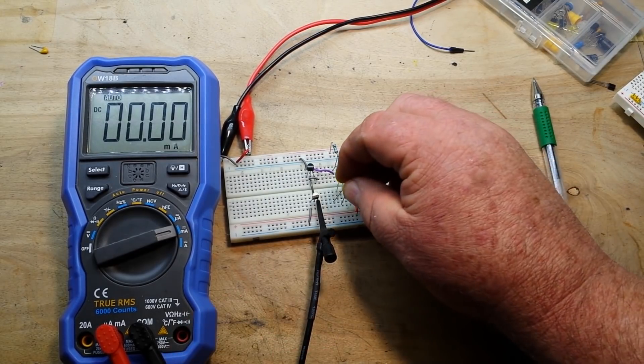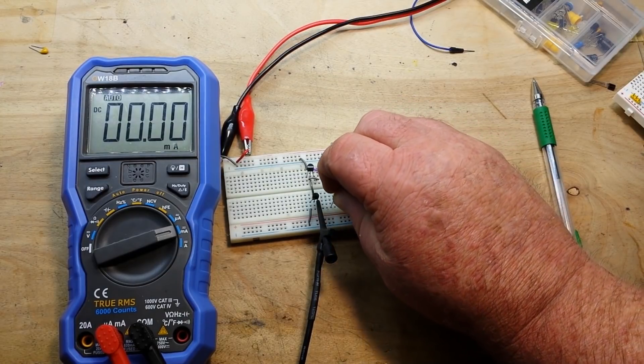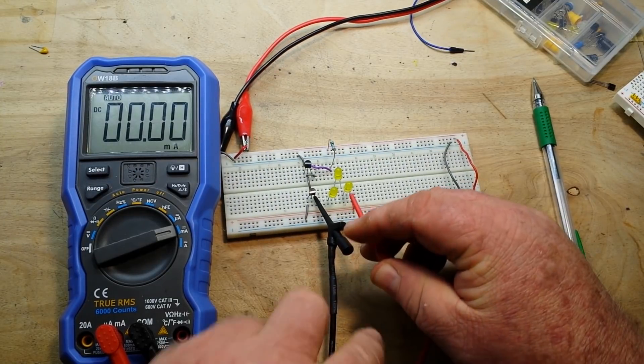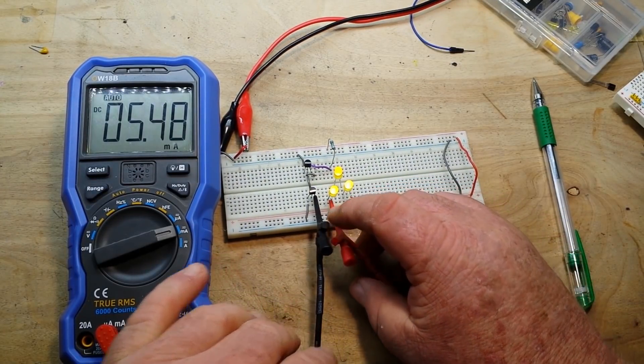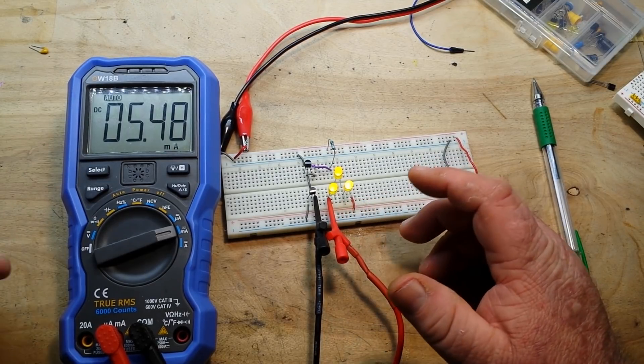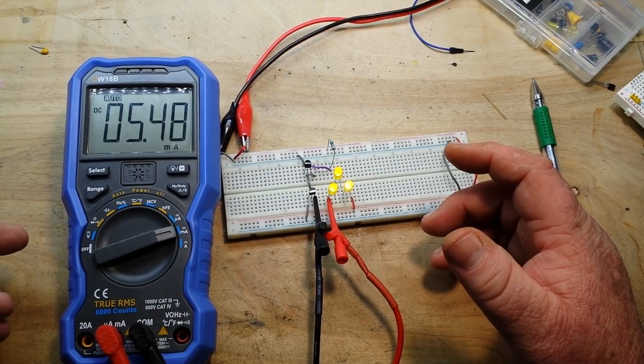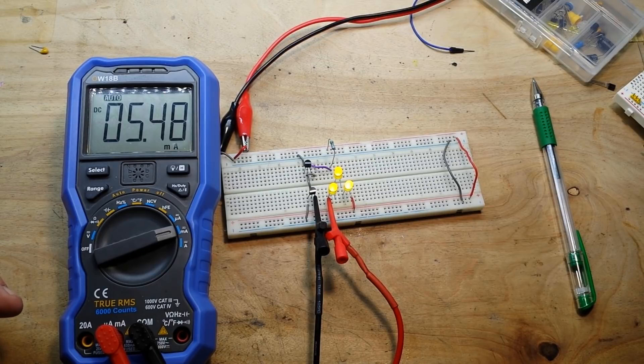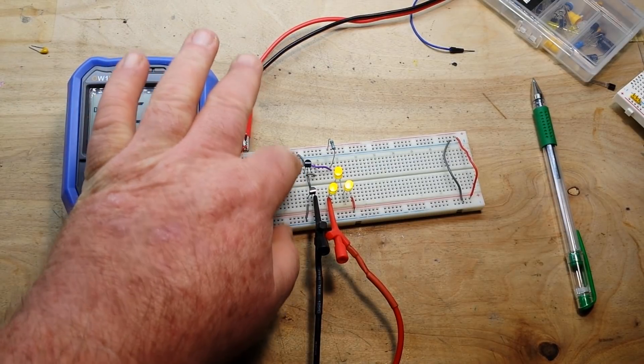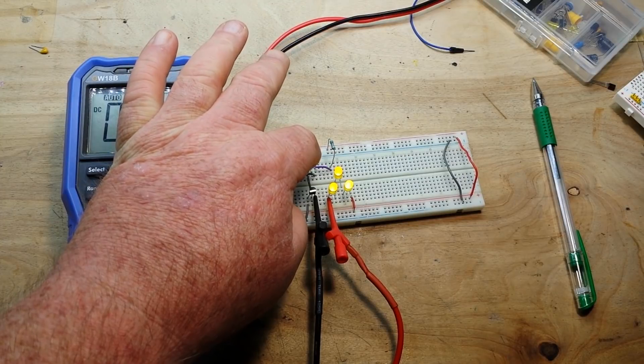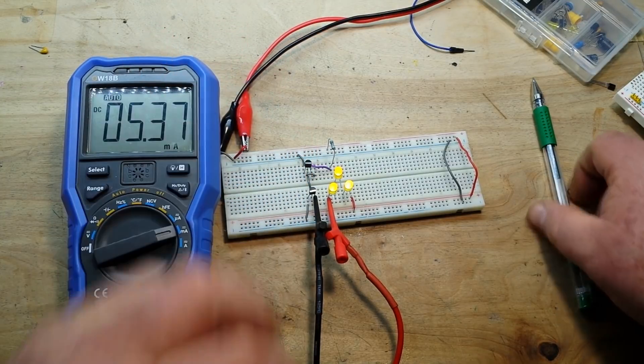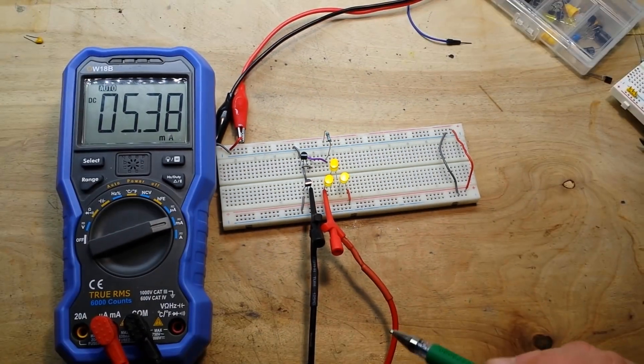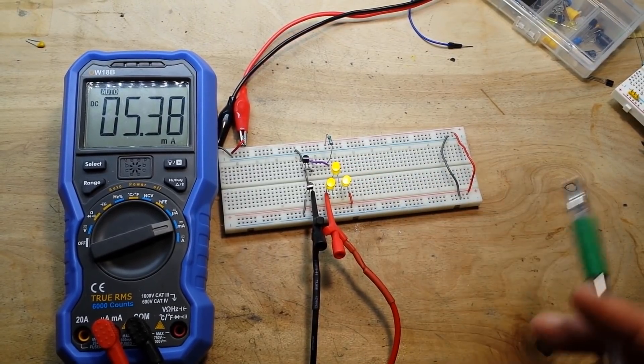And if we add in yet another, this breadboard is one of the cheap Chinese ones, not so great. There is three and you see we have dropped maybe a half of a milliamp. But it is never going to draw more than that 6 milliamps because that current is limited by that resistor over here and that little jumper right there. That is limiting the current regardless of the load.